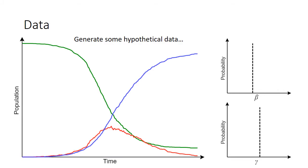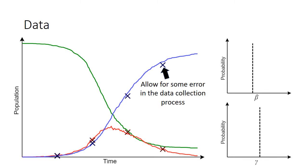Next we consider collecting some hypothetical data from this system. In this example, the crosses represent measurements made on the infected and recovered populations, but it's important to remember that in other situations data could consist of measurements on transition numbers, for example weekly cases, hospitalisations and deaths. Note that the crosses do not align precisely with the curves, and this reflects some error in the data collection process itself.